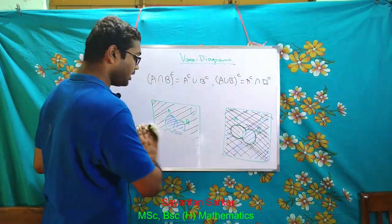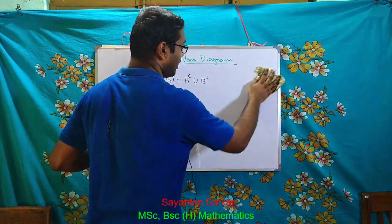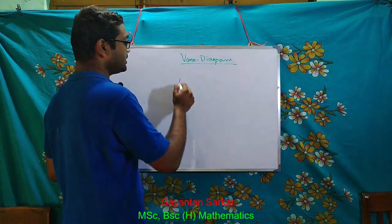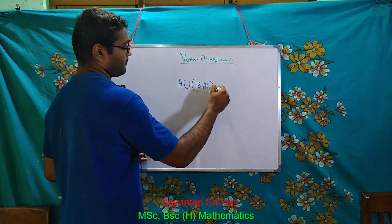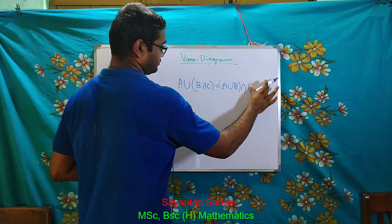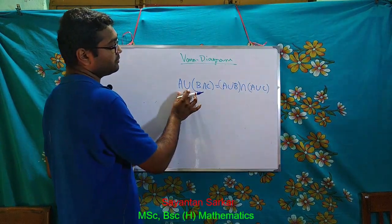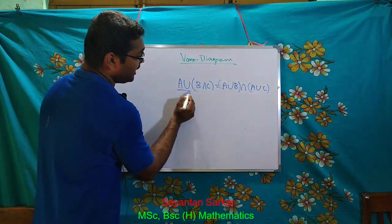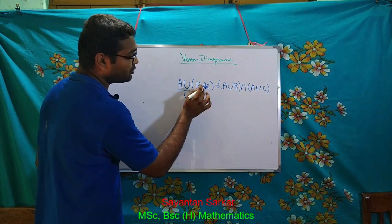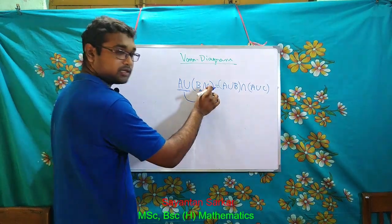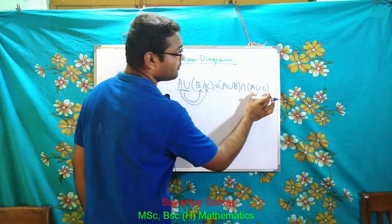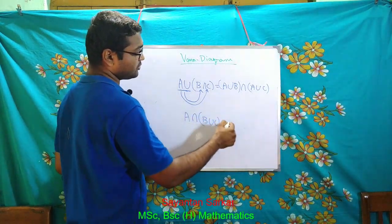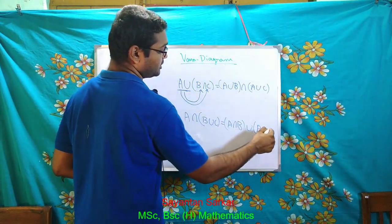As a homework, prove the distributive law: A union (B intersection C) equals (A union B) intersection (A union C). Here A pairs once with B via union, and once again with C via union. Similarly, A intersection (B union C) equals (A intersection B) union (A intersection C). Try to prove these by yourself using Venn diagrams.